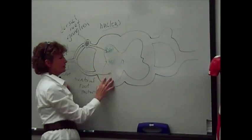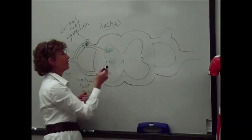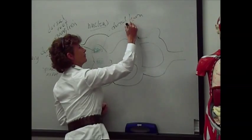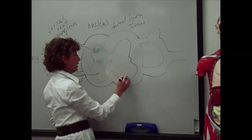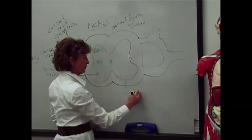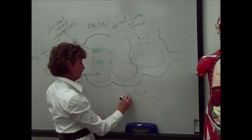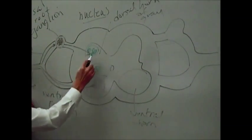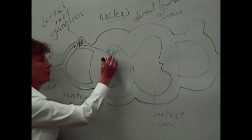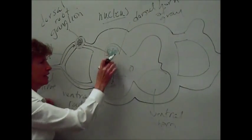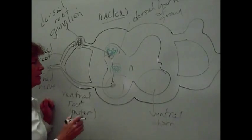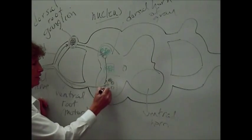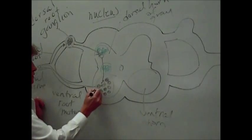If this is the dorsal side and this is the ventral side, then that's going to make this the dorsal horn of gray matter, and that makes this down here the ventral horn of gray matter. The dorsal horn is going to primarily have cell bodies of small neurons called interneurons that synapse inside the central nervous system. The ventral horn is going to have primarily cell bodies of motor neurons that are carrying information away from the central nervous system.